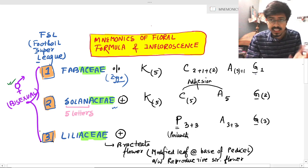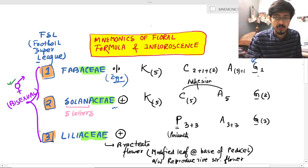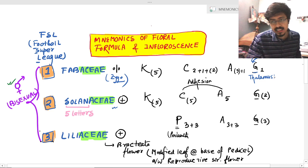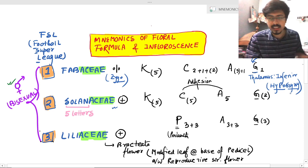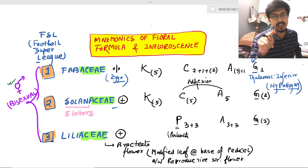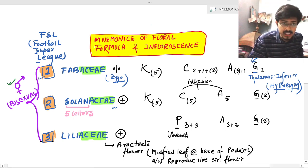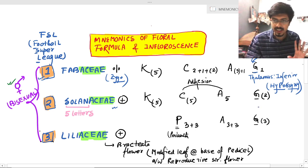In every case, we can see that the ovary is superior. So this will be called hypogyny, perigyny, or epigyny. The thalamus is inferior in all three cases, so this is known as hypogyny. The naming is based upon the thalamus — since thalamus is inferior, it is hypogyny — but the ovary is superior in all three families. For Fabaceae, serial number one, there is one ovary; Solanaceae has two ovaries; and Liliaceae has three ovaries.